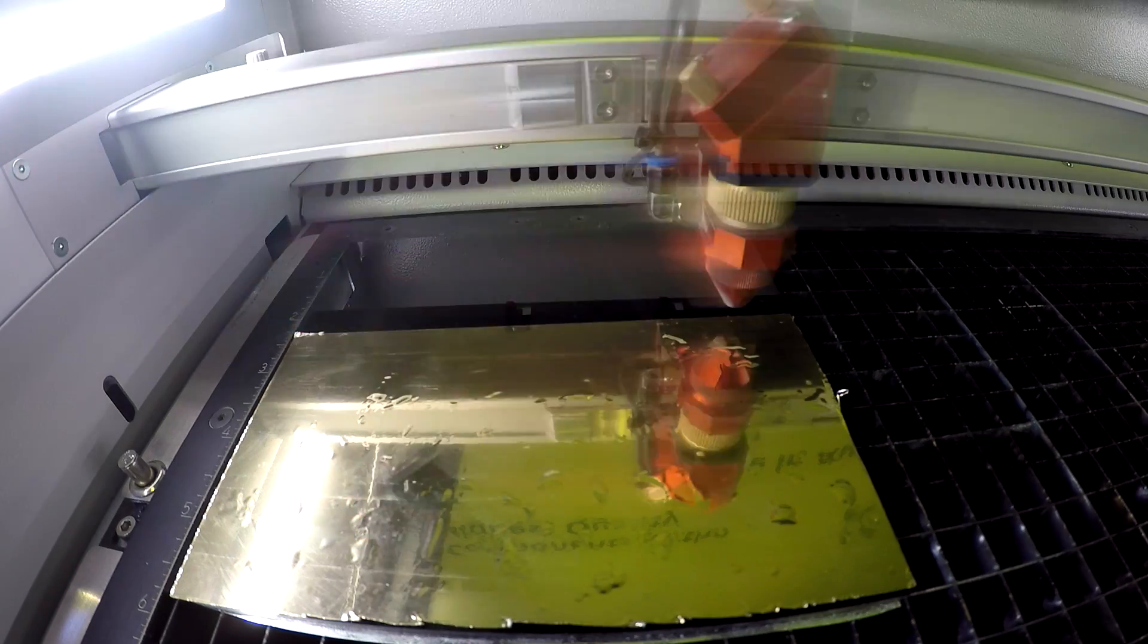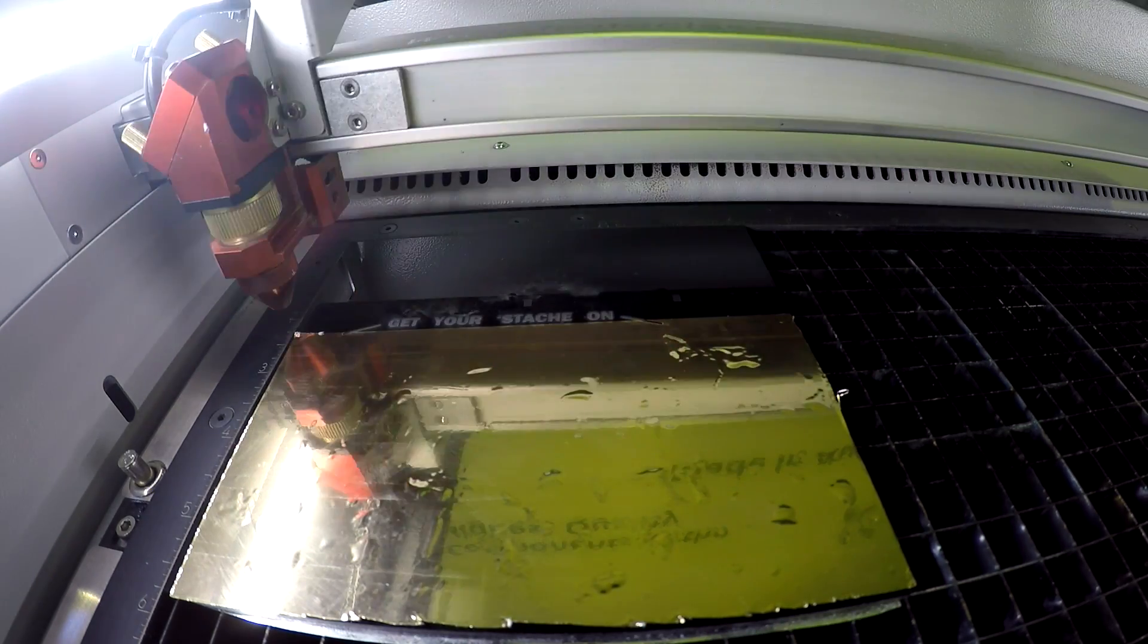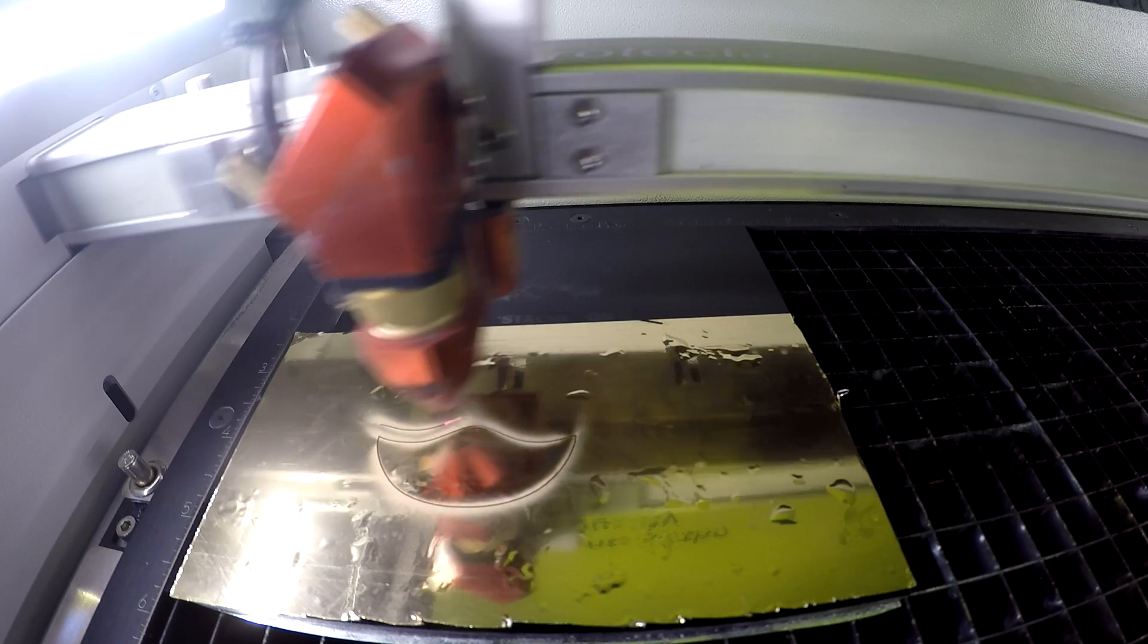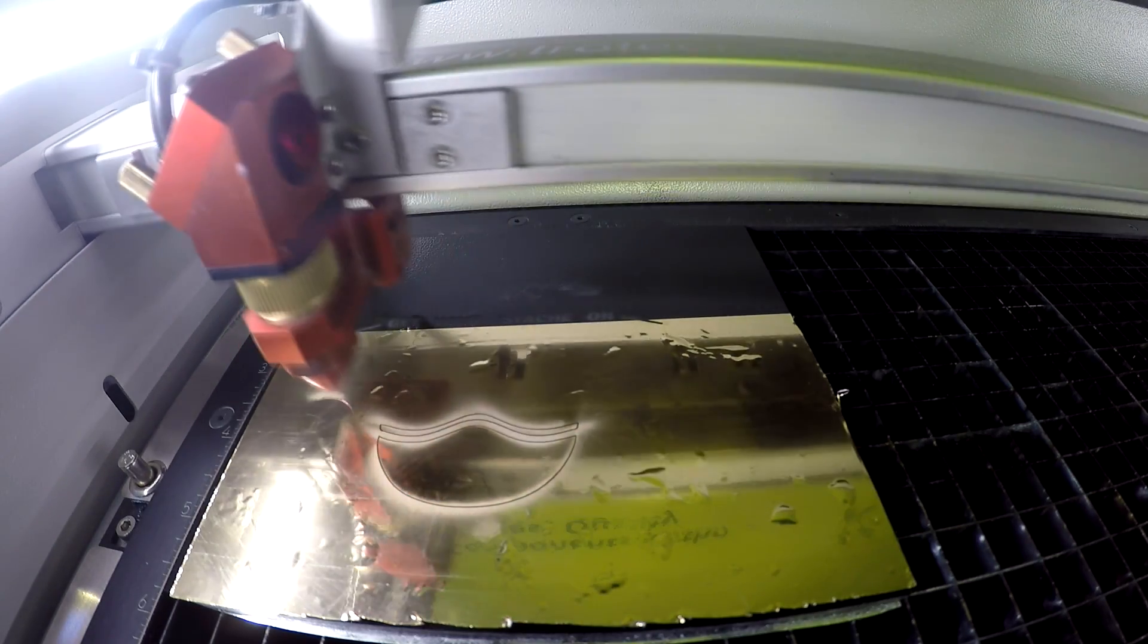For our Gold Foil section, we used our Kiss Cut method. Because our design is symmetrical, we were able to pop it out, flip it over, and redo our Kiss Cuts on the other side.